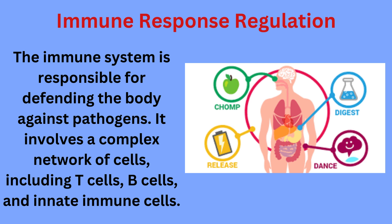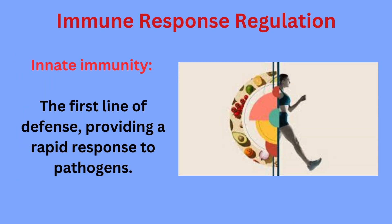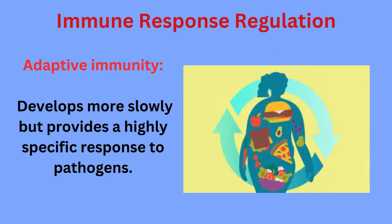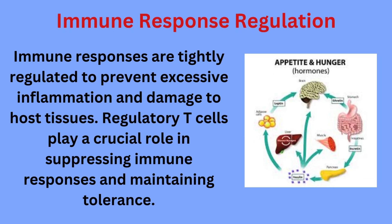Innate immunity is the first line of defense, providing a rapid response to pathogens. Adaptive immunity develops more slowly, but provides a highly specific response to pathogens. Immune responses are tightly regulated to prevent excessive inflammation and damage to host tissues. Regulatory T cells play a crucial role in suppressing immune responses and maintaining tolerance.